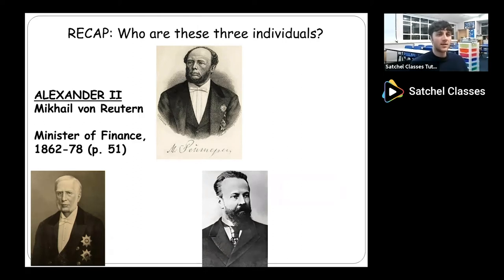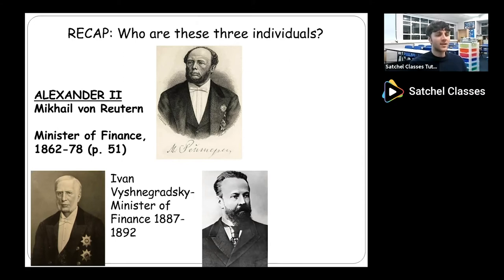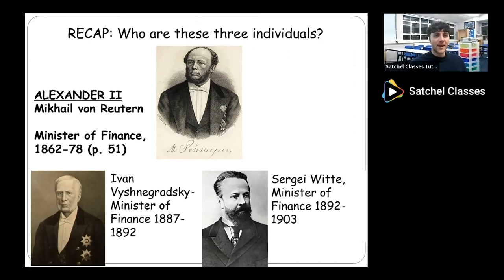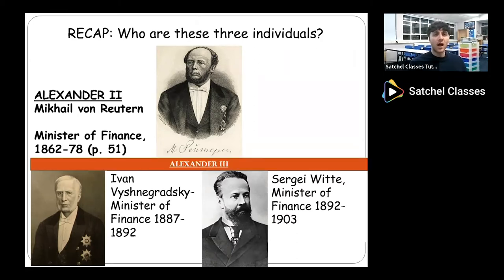Let's recap on the finance ministers we've visited so far. We started out with Mikhail von Reuten, who was the Minister of Finance from 1862 to 1878 under Tsar Alexander II, the Tsar Liberator. Then we get Ivan Vishnagradsky, a key figure and finance minister from 1887 to 1892. Some industrialization does take place under Vishnagradsky — a degree of growth of factories and a small shift away from serfdom towards the industrial working class. But it is really under Sergei Witte, finance minister from 1892 to 1903, that the economy starts to develop at pace and rocket from strength to strength.